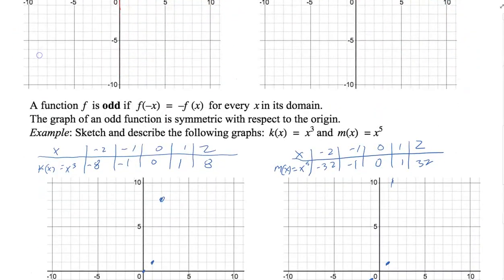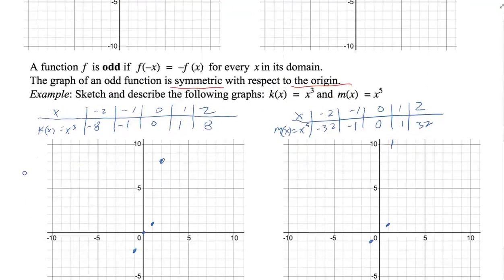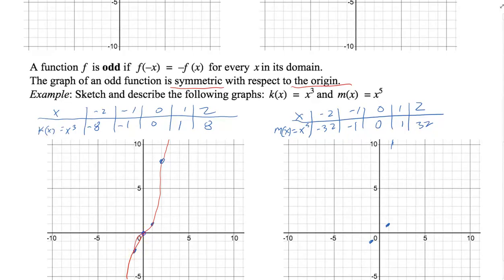Now let's look at odd functions. A function is odd if f of negative x is equal to negative f of x for every x in its domain. The graph of an odd function is symmetric with respect to the origin. We can plot all graphs from a table of values, and after plotting and drawing a smooth curve through the points, we see it's symmetric about the origin.